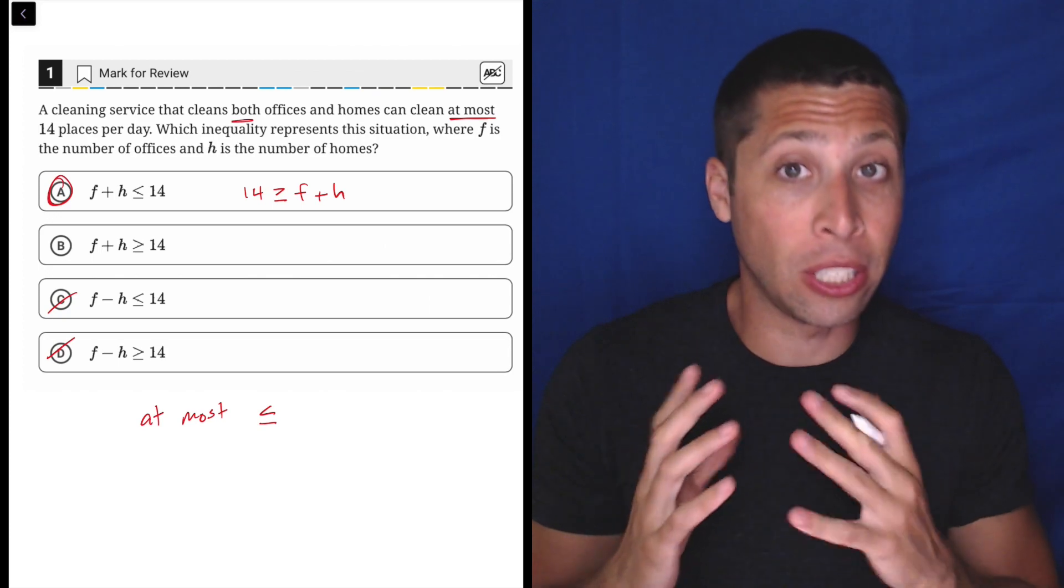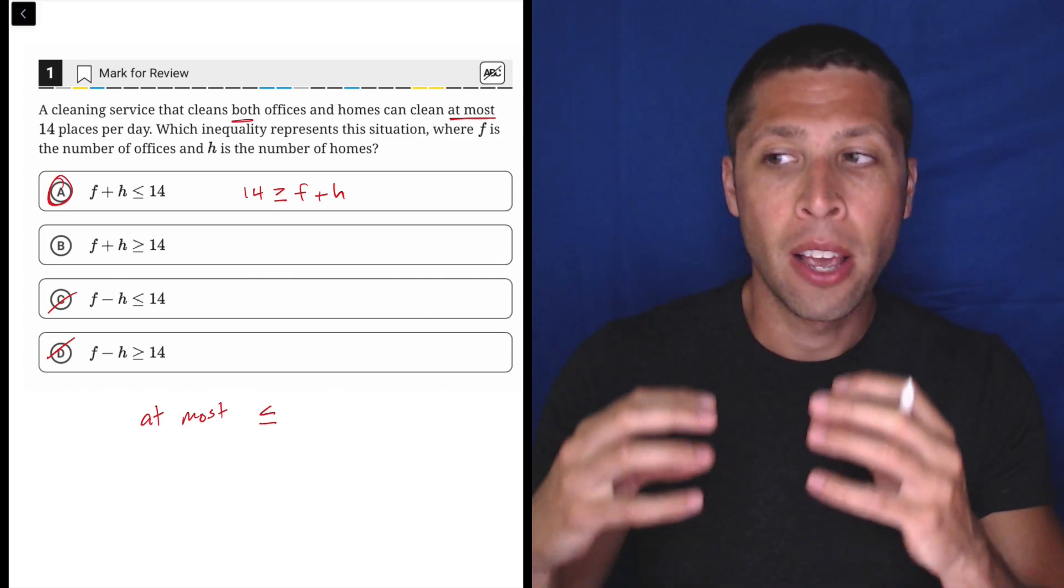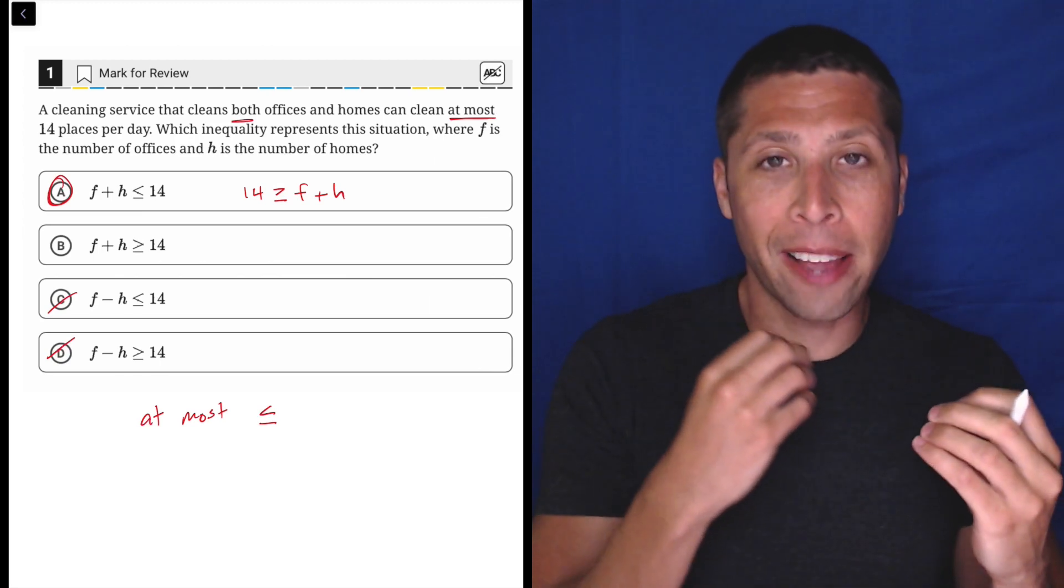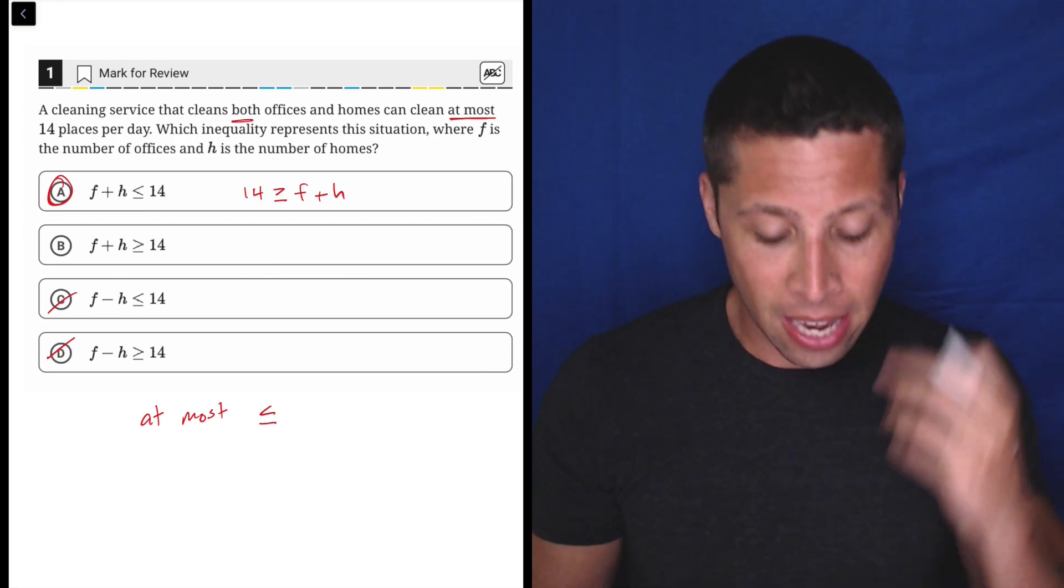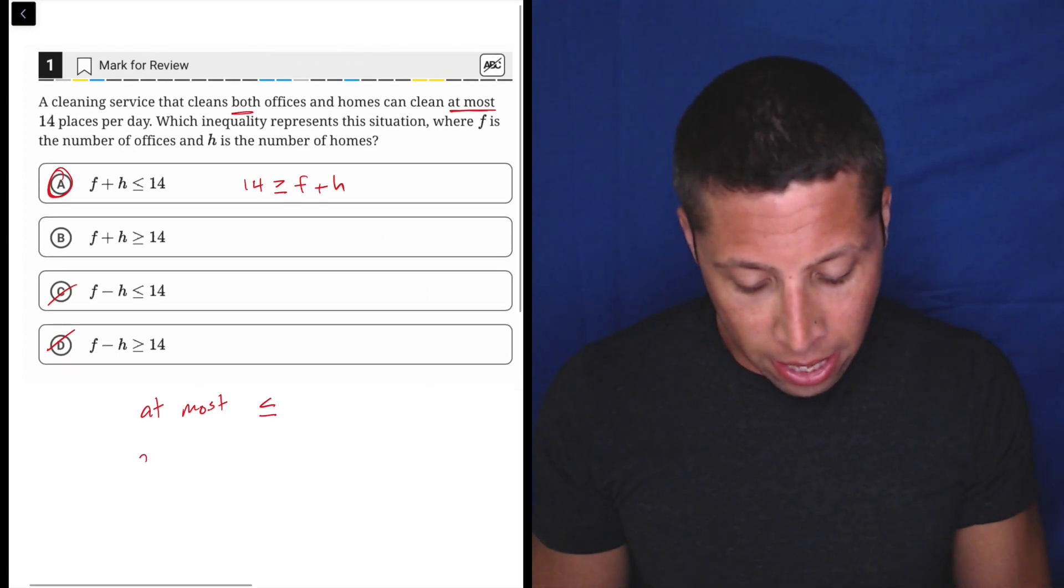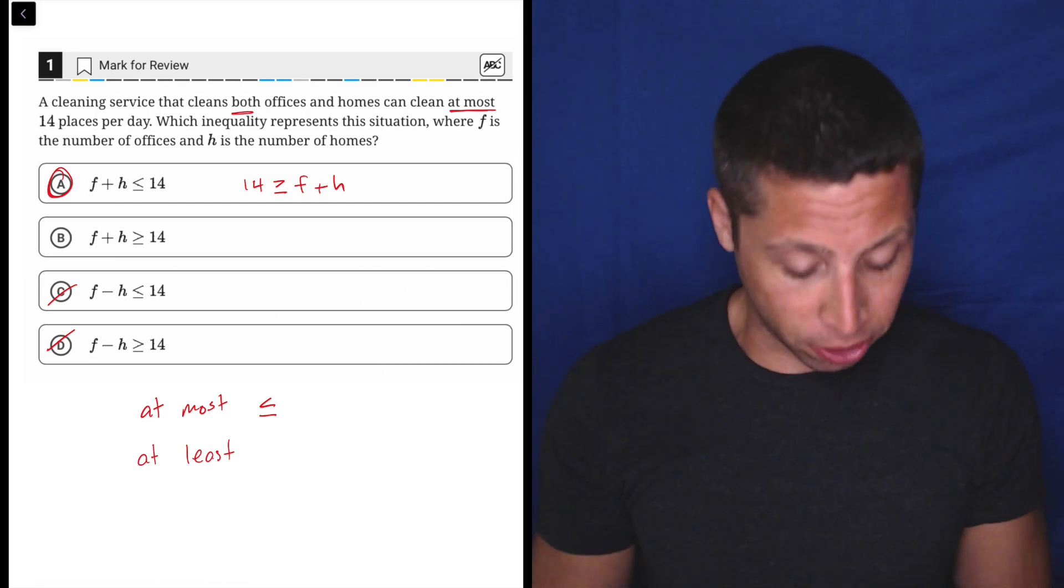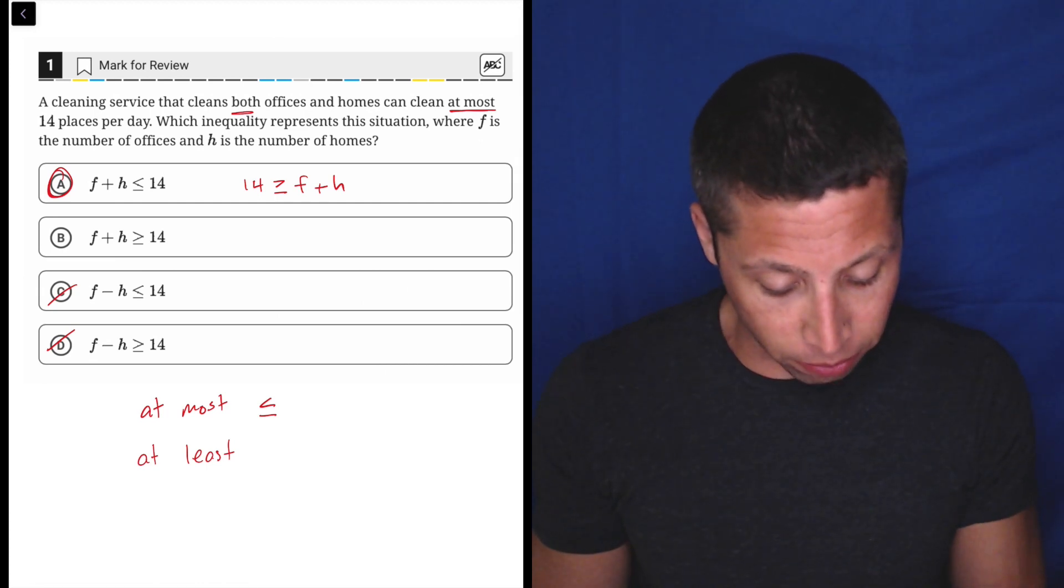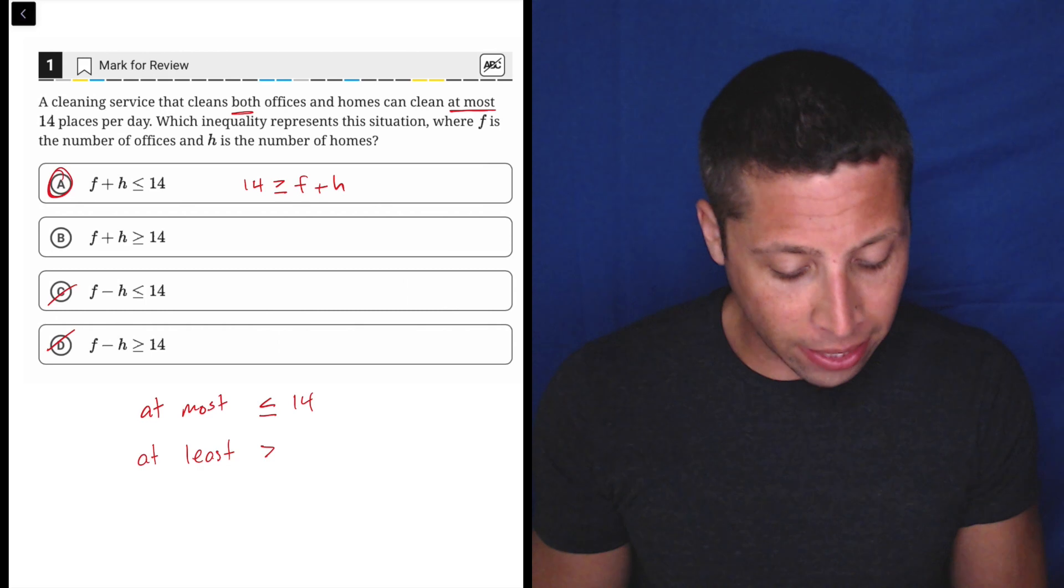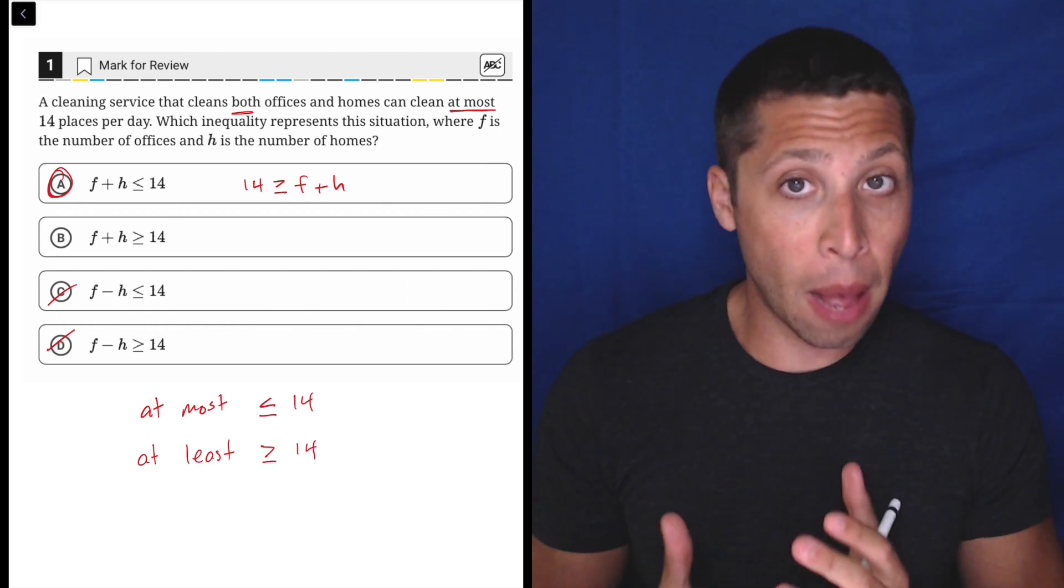So this is a move that's very difficult to deal with in inequalities is that sometimes the words can be the reverse of what we would expect. But just to give you the other side of this coin too, the phrase at least would have flipped it so that if it was at least 14, then that's more than 14 or equal to it. So those are the two that are most common.